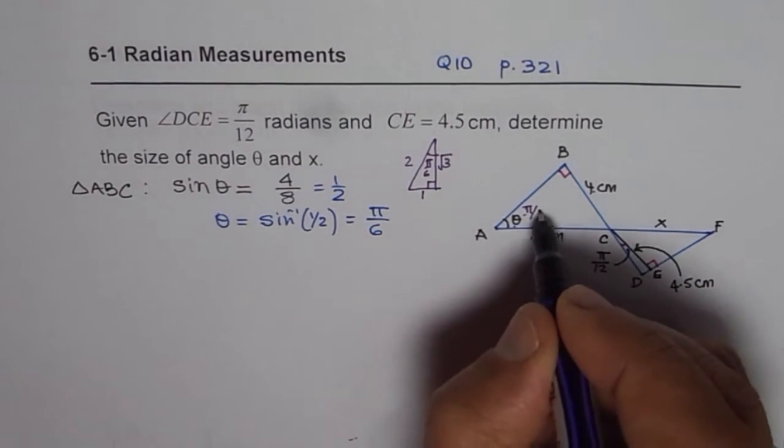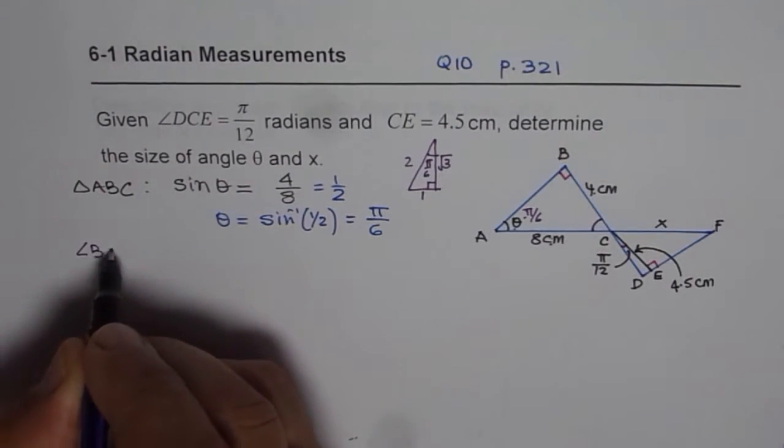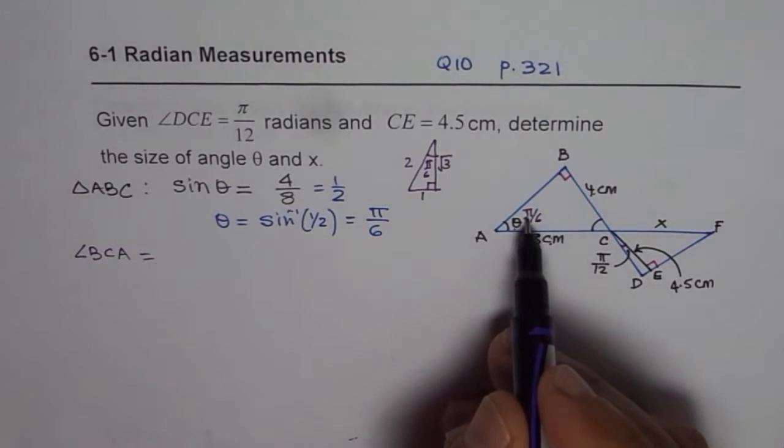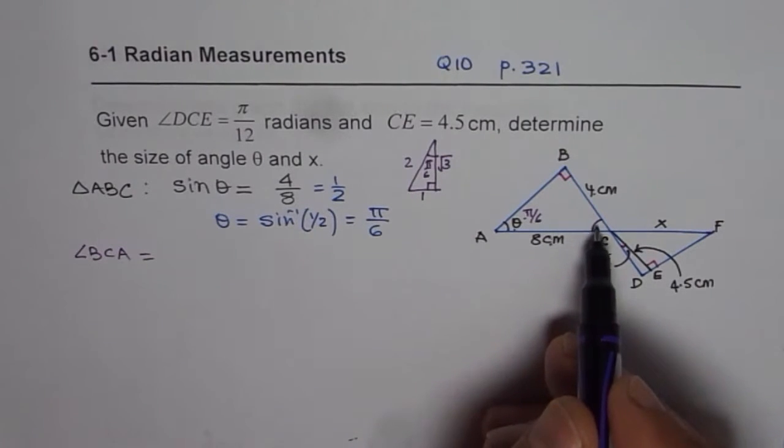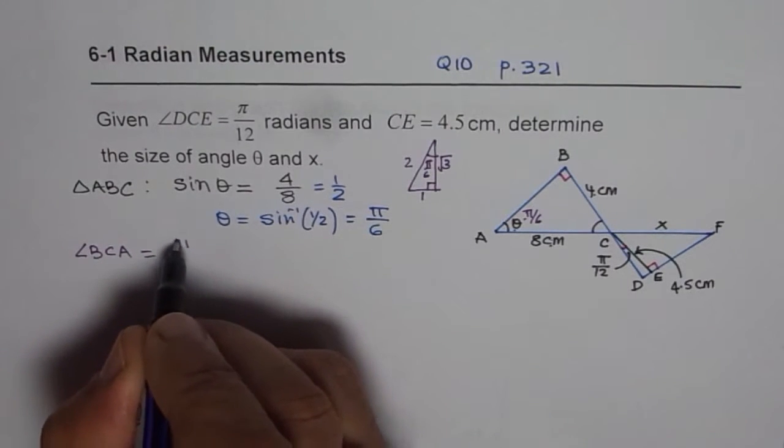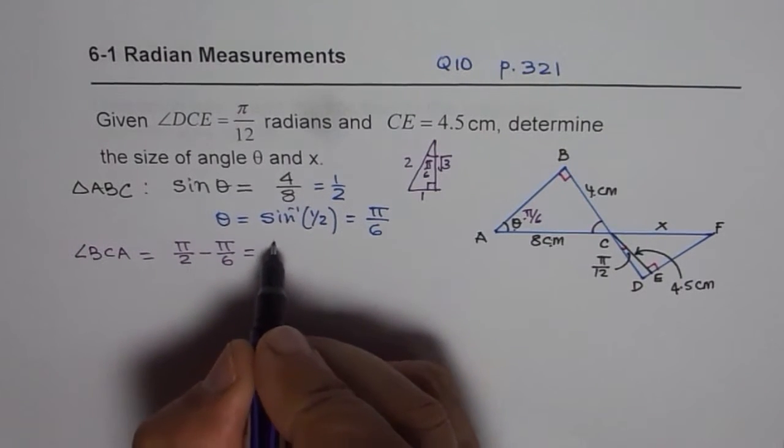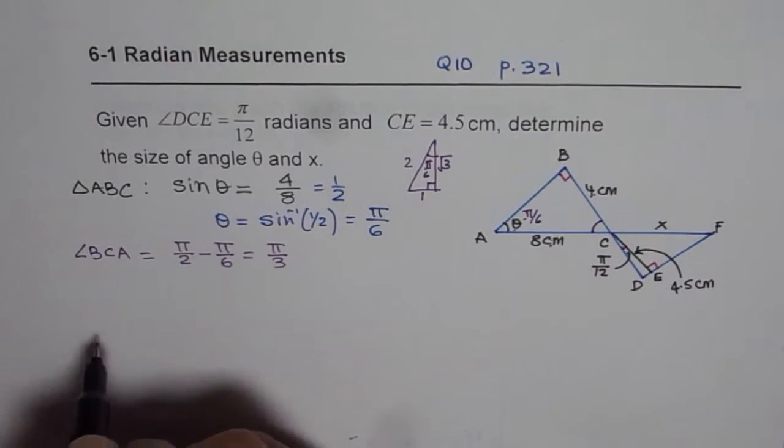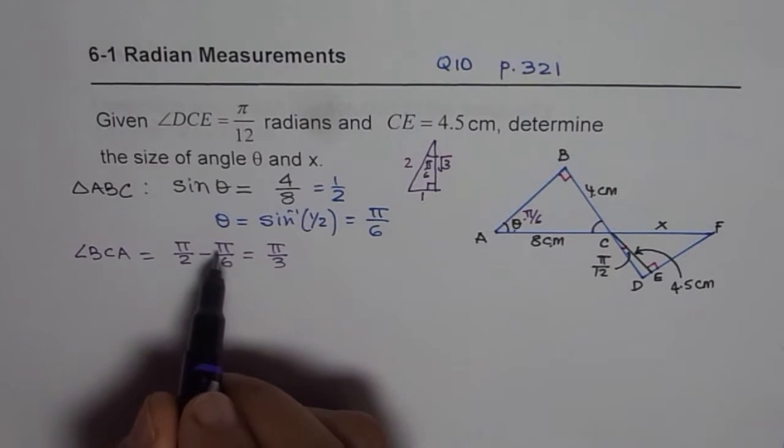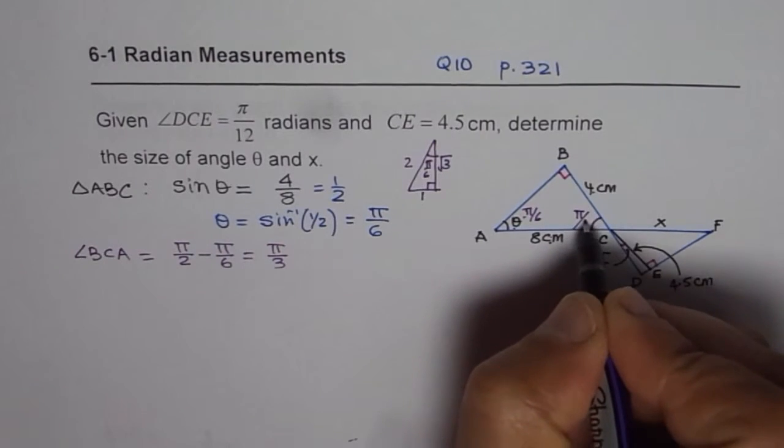Now if angle θ is π/6, what should be angle BCA? Angle BCA should be equal to 90 minus π/6, since sum of these three angles is 180 degrees. Let me write this as π/2 minus π/6, which of course will be π/3. You can take common denominators which is 6 and then 3 minus 1, so you get 2 over 6 and this simplifies to π/3.